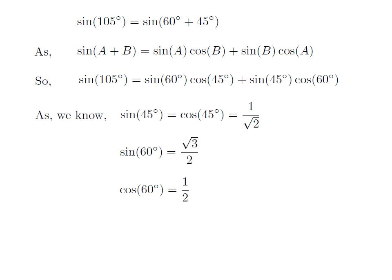As we know, sine of 45 degrees is equal to cosine of 45 degrees, which is equal to 1 upon square root of 2. And sine of 60 degrees is equal to square root of 3 upon 2. And cosine of 60 degrees is equal to one half.